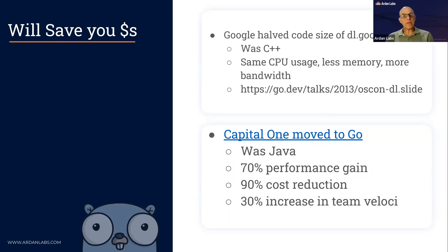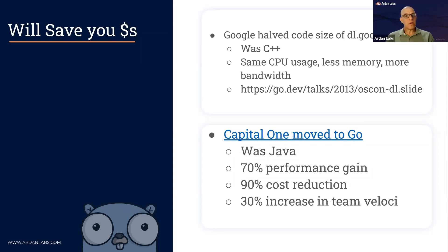A more recent example, around 2018, is Capital One. They moved to Go from Java and saw about 70% performance gain, about 90% cost reduction in cloud architecture costs, and about 30% increase in team velocity. So Go is more efficient — we can see some of the reasons why it helps developers and also improves the development process.